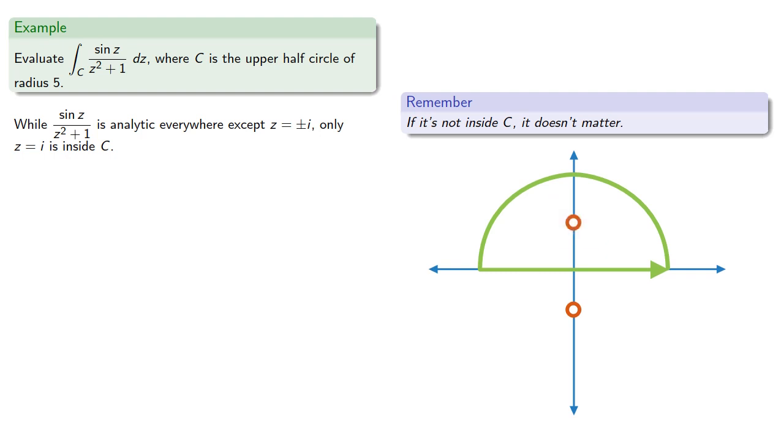So we want to find f(z) where f(z) over z - i is sine z over z² + 1. Again you can think about this as factoring out the bad point at z = i.